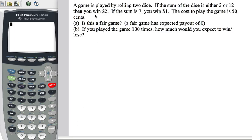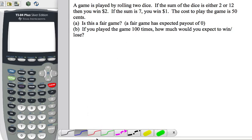A game is played by rolling two dice. If the sum is either two or twelve, you win $2. If it's seven, you win a dollar. Everything else, you lose your money, and it costs 50 cents to play.